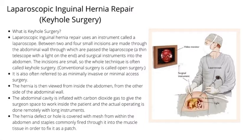One of the more modern methods is laparoscopic inguinal hernia repair, also known as keyhole surgery. Laparoscopic inguinal hernia repair uses an instrument called a laparoscope. Between two and four small incisions are made through the abdominal wall, through which are passed the laparoscope — a thin telescope with a light on the end — and surgical instruments into the abdomen. The incisions are small, so the technique is often called keyhole surgery. It is also referred to as minimally invasive or minimal access surgery. The hernia is then viewed from inside the abdomen, from the other side of the abdominal wall.